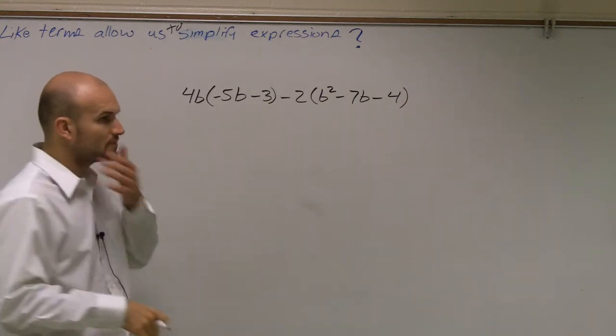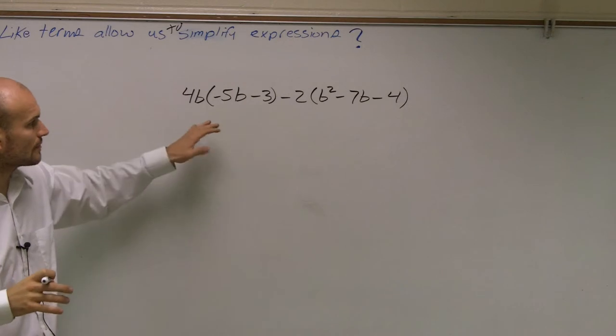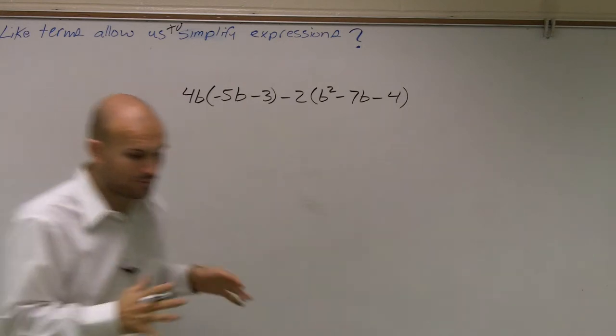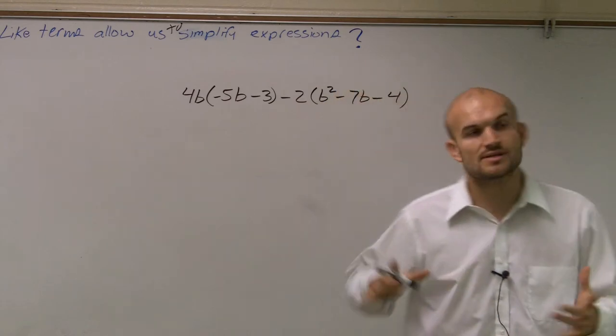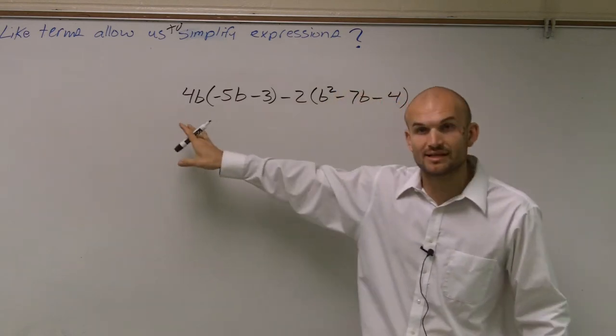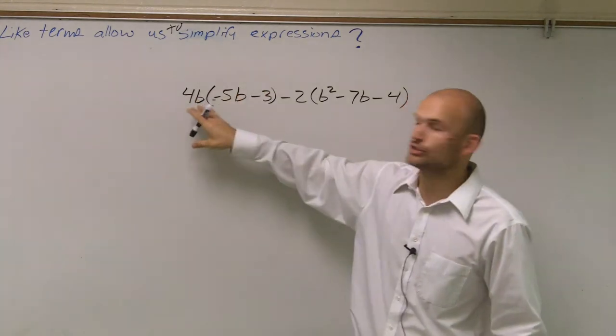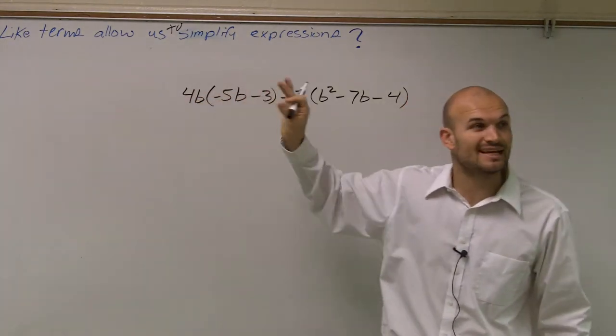So what I like to do guys, if you take a look at it up here, now what we have is the distributive property twice. The main important thing, Austin, that you want to remember is whenever you have a number outside your parentheses, you need to make sure, Andre, you multiply that number times everything inside of there.